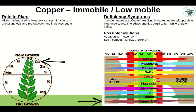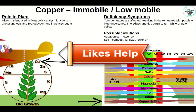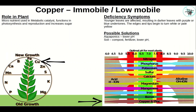Copper is an immobile or low-mobile micronutrient — you'll see it in the new growth first. It's used as a metabolic catalyst in photosynthesis, reproduction, and increasing sugar. Young leaves are affected first, resulting in dark leaves with purple or blue undertones; edges and tips begin to turn white, pale, and yellow. Possible solutions: lower your pH. In soil: compost, fertilizer, lower pH. In aquaponics, be very careful not to let copper get out of control, as it will affect your fish.